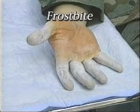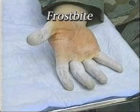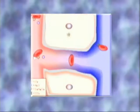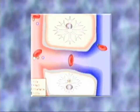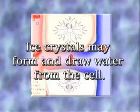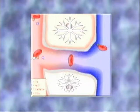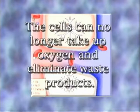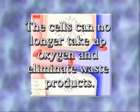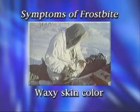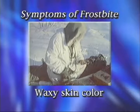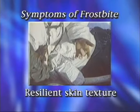Frost bite is the freezing of tissues, which may include the skin, muscles, tendons, and bone. When the cells in tissue freeze, all cellular activity ceases. Ice crystals may form and draw water from the cell. Ice crystals can cause physical damage to the cells. Also, the cells can no longer take up oxygen and eliminate waste products. Some symptoms of frost bite include a waxy skin color and skin texture that is resilient to the touch.